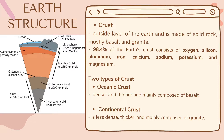The earth's structure is made up of three different layers: the crust, mantle, and core. The crust is the outside layer of the earth and is made up of solid rock, mostly basalt and granite. 98.4% of the earth's crust consists of oxygen, silicon, aluminum, iron, calcium, sodium, potassium, and magnesium. There are two types of crust. The oceanic crust is denser and thinner and mainly composed of basalt, composed of mostly mafic igneous rocks that have a slightly lower silicon and oxygen content.